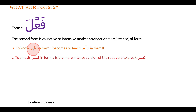Sometimes the meaning changes and becomes reflexive. For example, 'alim' means to know — as in 'I know the book' or 'tomorrow's a holiday.' If you want to change it to Form 2, all you need to do is double the middle letter by adding a shadda on it. Then instead of 'knowing,' it becomes 'to teach.' That is what we call a Form 2 verb.